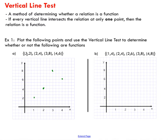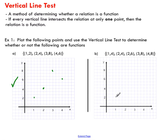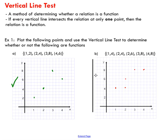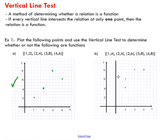For every x value there's only one y value — we put an x value in, we get a y value out. Let's take a peek at this next one. Same thing: I'm going to take my vertical line and pass it through my points. Once I pass through this first point, there is only one point on that vertical line.